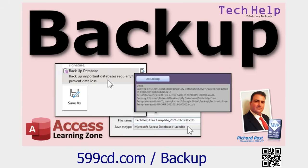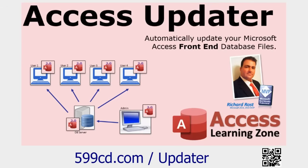Another thing that might be helpful: check out my video on backing up your database. A lot of people panic when they get errors like this, but if your database is backed up properly, you're much less likely to panic. Also, after you split your database and you want to push updates to users on your network, check out my Access Updater. With one click of a button, it will copy your new front-end changes to all the different people on your network, so you don't have to go around copying front ends to Joe's machine and everyone else's.